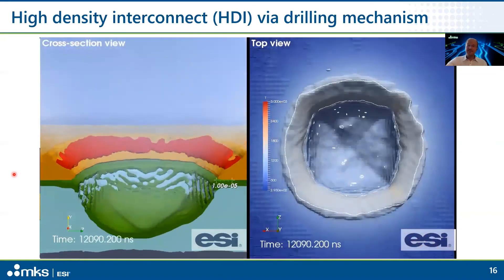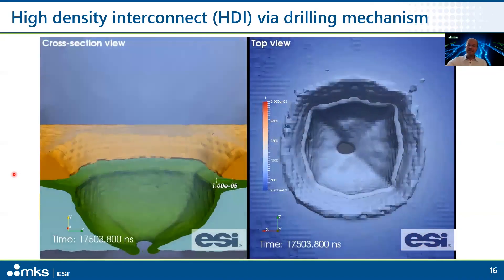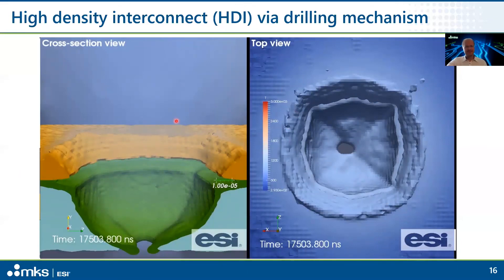This is a very efficient process because you don't need to evaporate the copper — all you need is the right melt pool and the right speed to create the right vapor pressure underneath. If the vapor pressure is too low, the copper will just ooze out, creating a large splash, which is unacceptable. In this example, it takes 10 to 20 microseconds to drill a via, which is very fast.